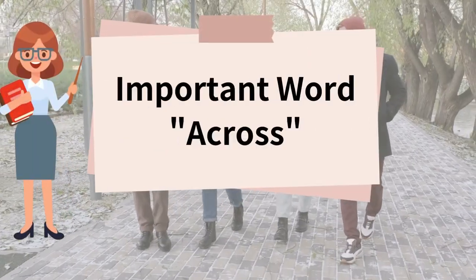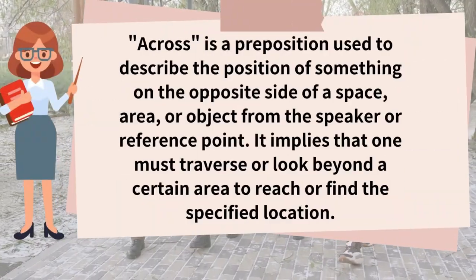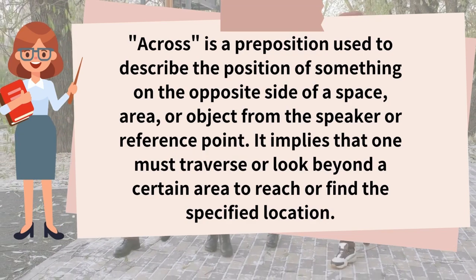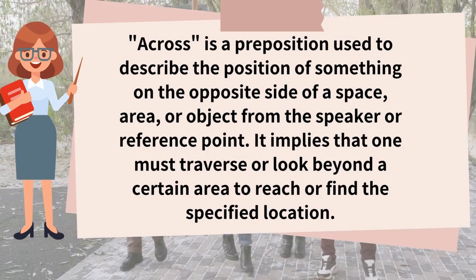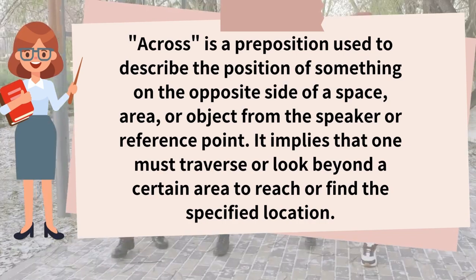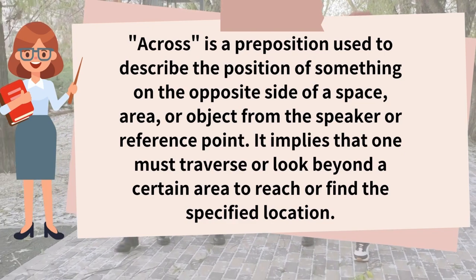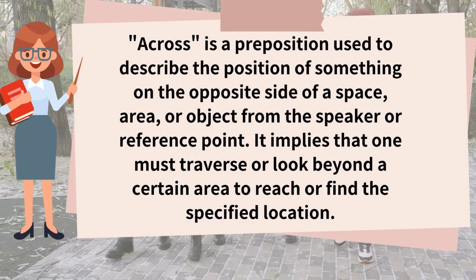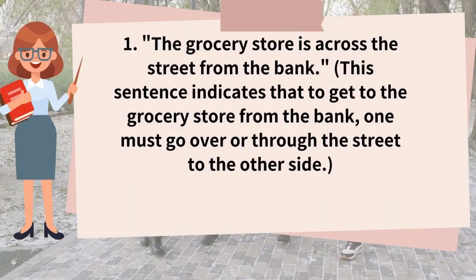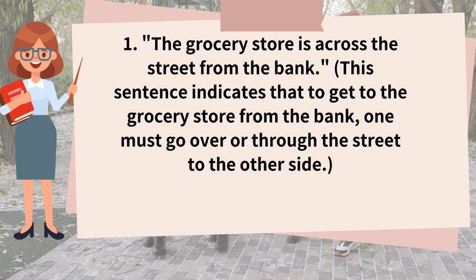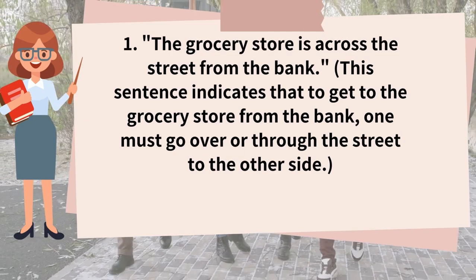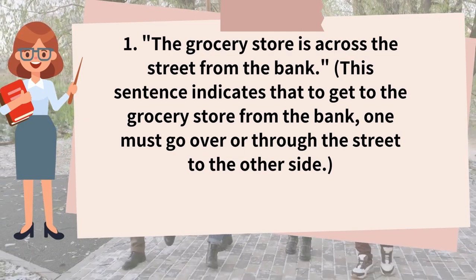Important word: Across. Across is a preposition used to describe the position of something on the opposite side of a space, area, or object from the speaker or reference point. It implies that one must traverse or look beyond a certain area to reach or find the specified location. Example sentence 1: The grocery store is across the street from the bank. This sentence indicates that to get to the grocery store from the bank, one must go over or through the street to the other side.